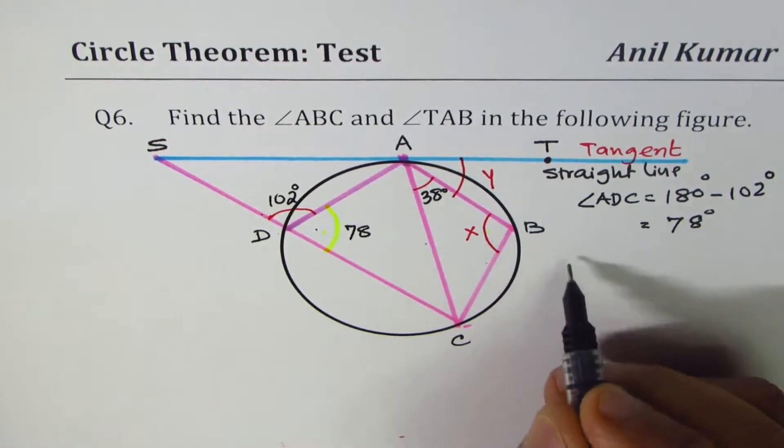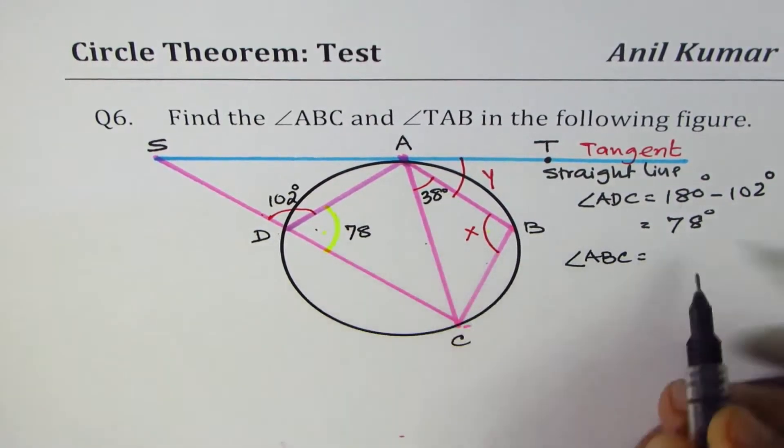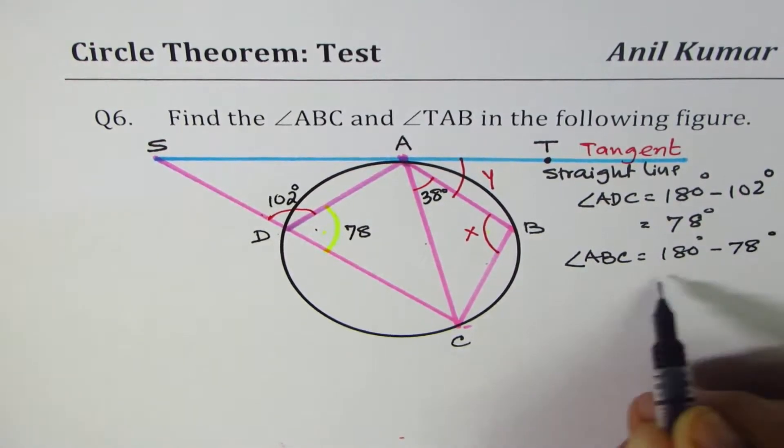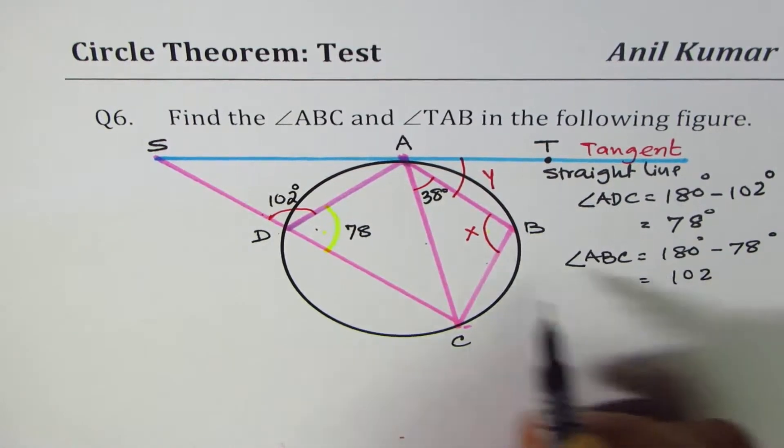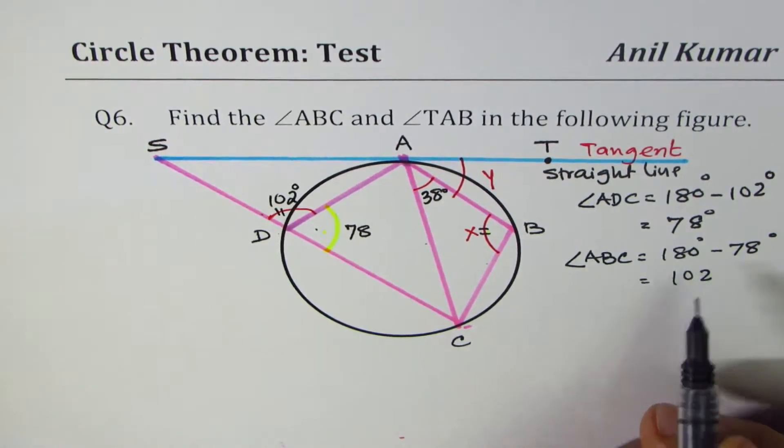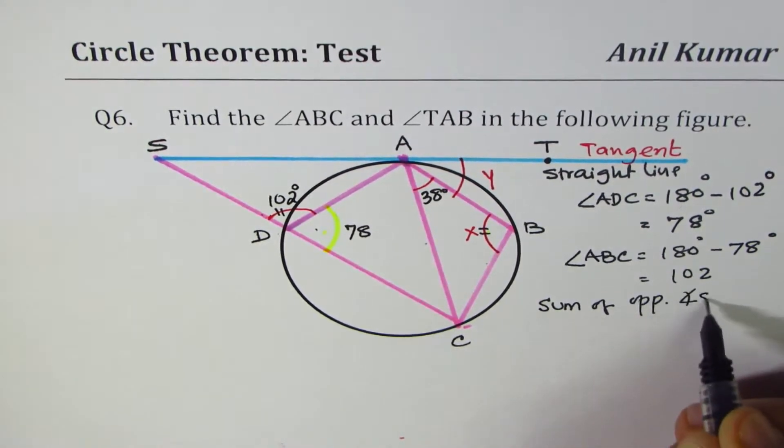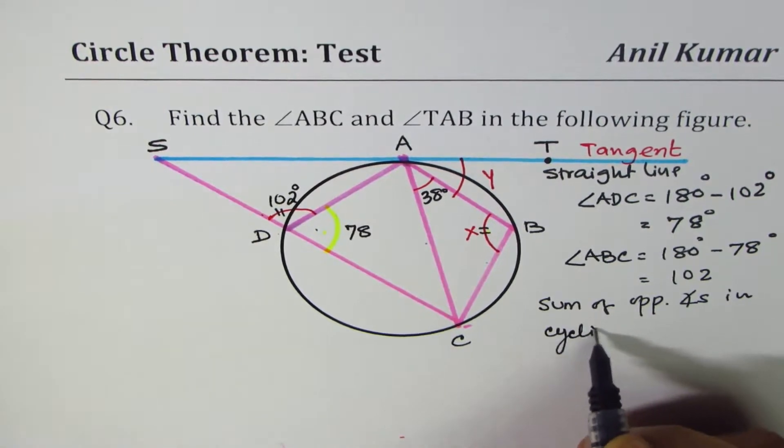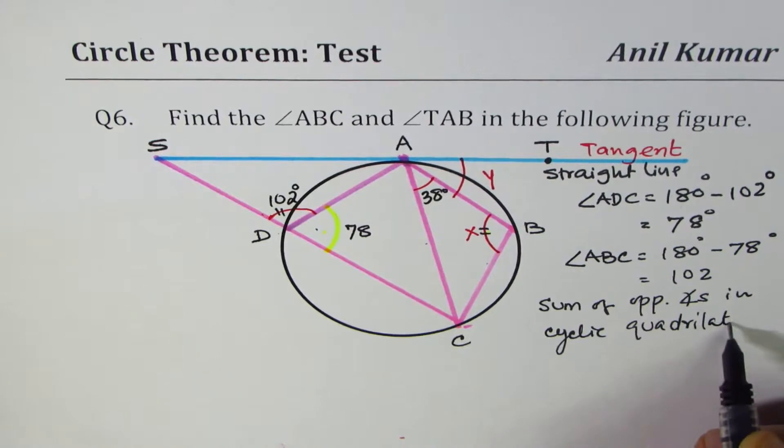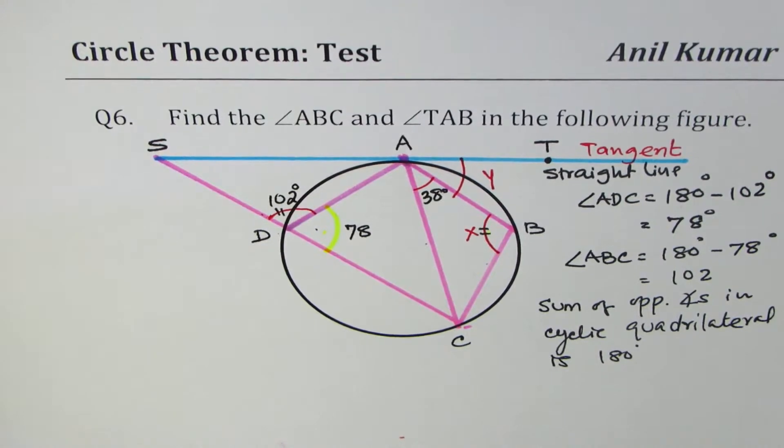And angle ABC, which we need to figure out, should be equal to 180 degrees, take away 78. Which will be 102. So, that happens to be equal to this angle. But this is based on our rule. That is, sum of opposite angles in cyclic quadrilateral is 180 degrees. So, the idea is that, in such questions, you have to give appropriate reasons based on circle theorem. So, that's what it is.